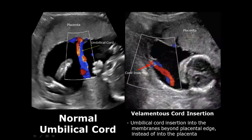In this image, the umbilical cord is inserting into the membranes and here is the placenta — this is also a velamentous cord insertion.